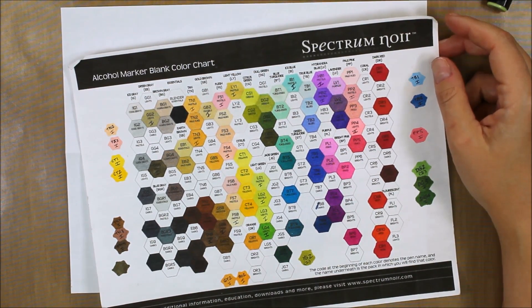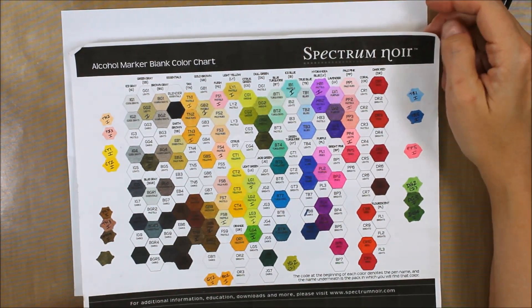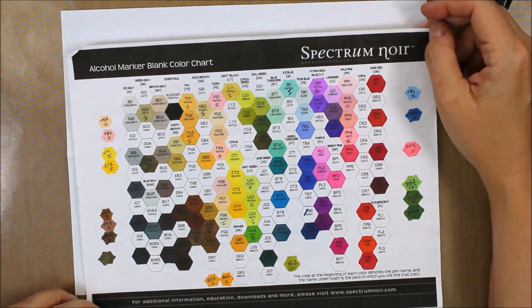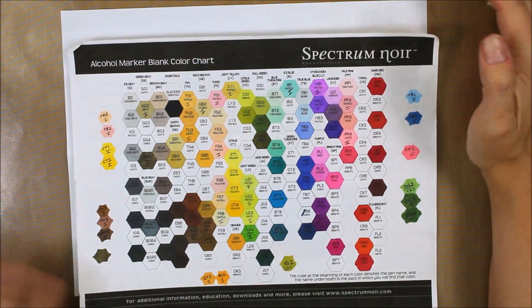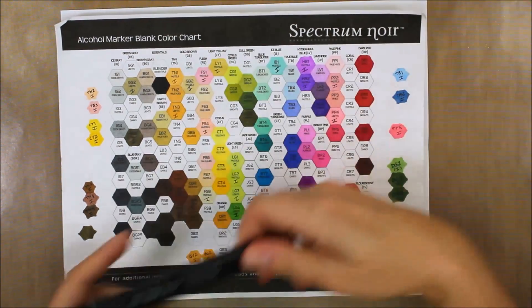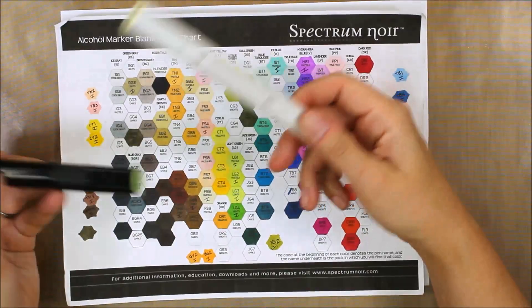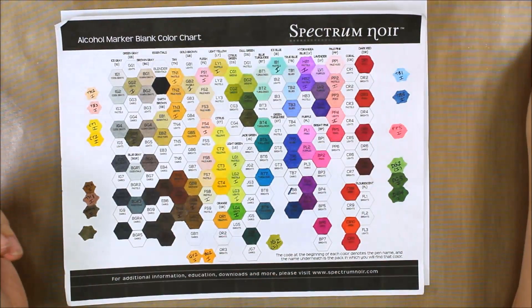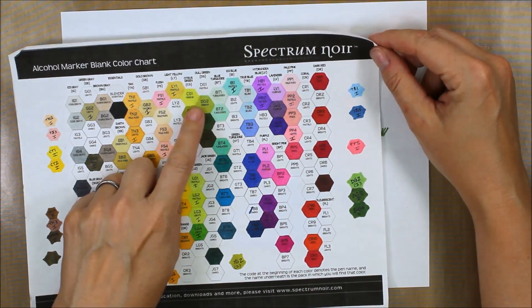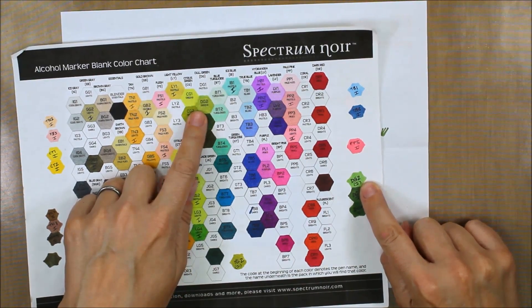I've base coated everything in a color, the lightest color I was going to use on that element, and then I've grabbed my color chart. This is available on the Spectrum Noir website. It's a color chart that you can color in with the colors you own. I know Copic has one of these as well. I have a combination of regular Spectrum Noir markers and Illustrator markers. I put them all on one color chart because I'm gonna use them all together and they coordinate really well.